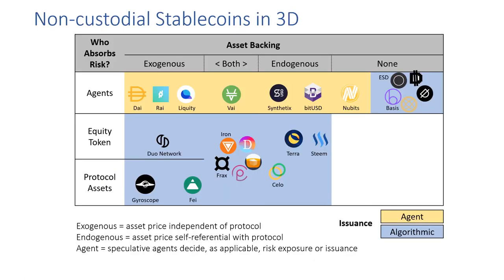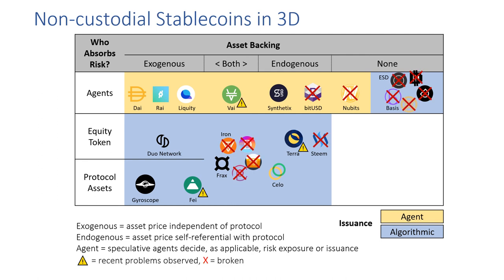As we've seen, there are multiple dimensions to consider, and the tree shown at the beginning can't really capture all of the different dimensions. Here we put forward a visualization where we can classify things according to three primary dimensions: the asset backing on the x-axis, the risk absorber type on the y-axis, and issuance on the colored axes. We plot where existing projects fall, and we also see several striking regions where stablecoin mechanisms have been especially fragile. This motivates us to understand why some mechanisms work better than others.